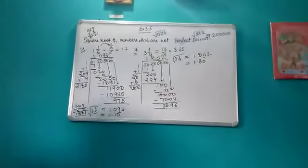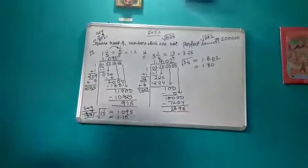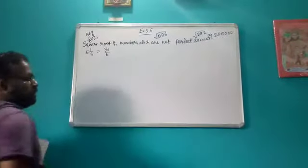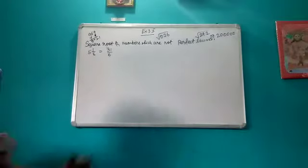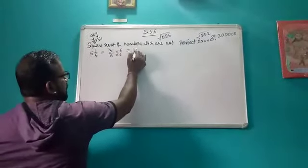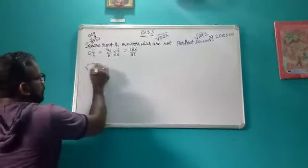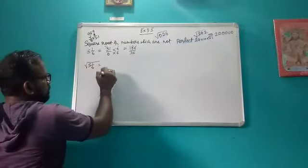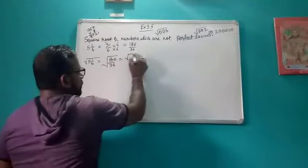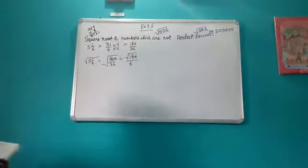This is how you can calculate the square root of numbers which are in fractions. Now, suppose we have to find the square root of 5 whole 1 by 6. There is one more method to solve this type of question: you can multiply and divide by the denominator. So you will get 186 upon 36, meaning the square root of 5 whole 1 by 6 equals the square root of 186 upon 36, which simplifies to the square root of 186 upon 6. So basically we have to find the square root of 186.